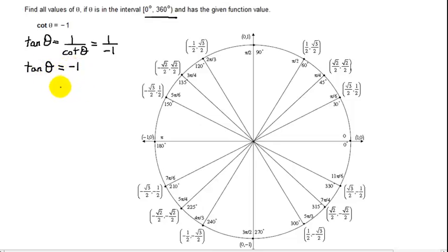I need to first figure out which quadrants the tangent of theta is negative. Remember the mnemonic all students take calculus. The tangent is positive in quadrant 1 and quadrant 3. Therefore the tangent is going to be negative in quadrant 2 and 4. So I need to find angles in quadrant 2 and also in quadrant 4.